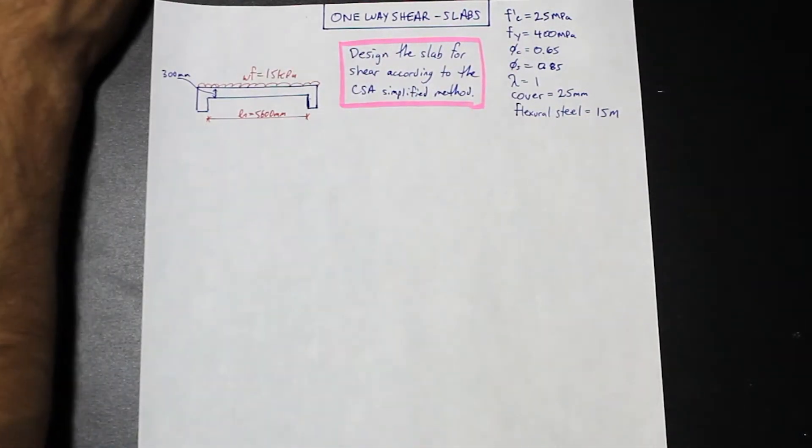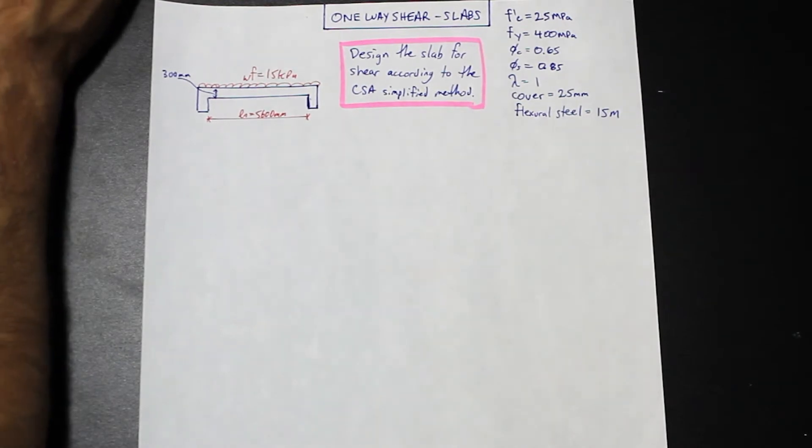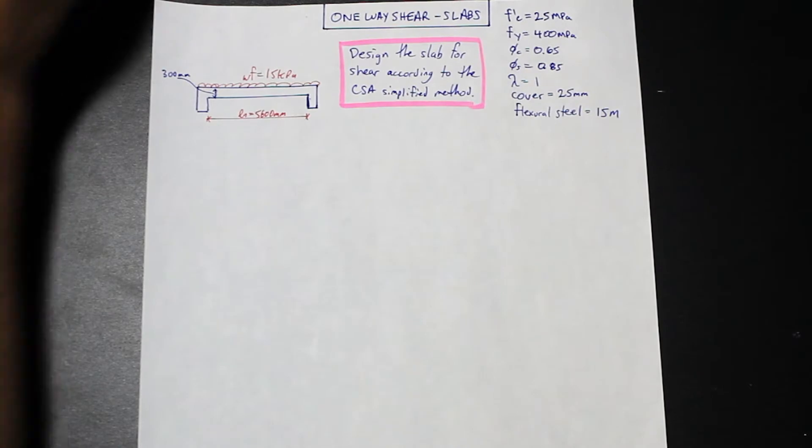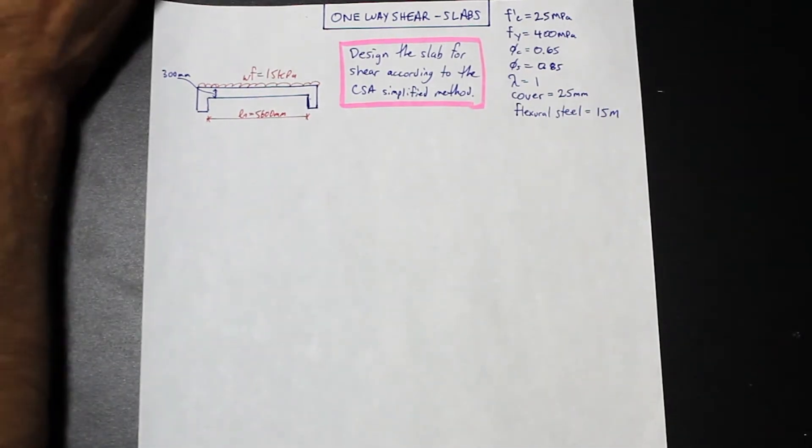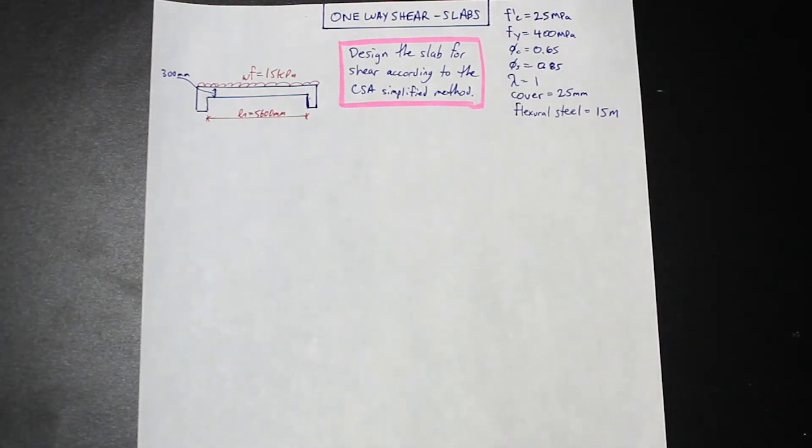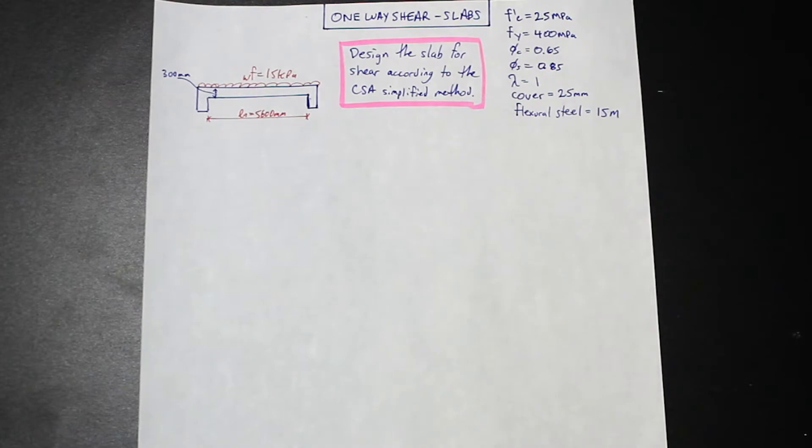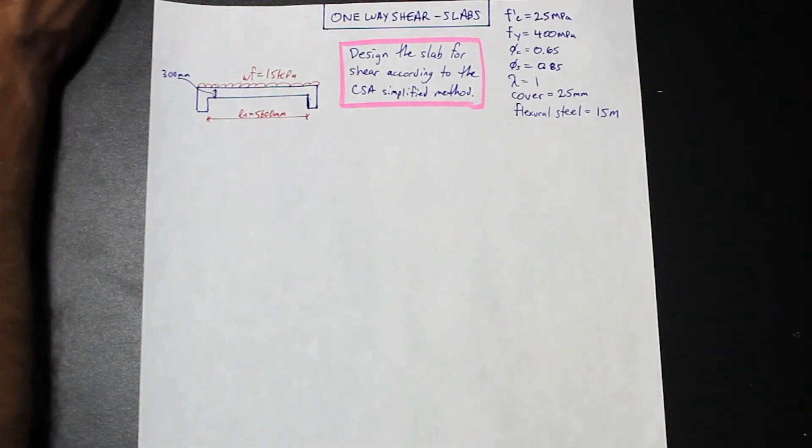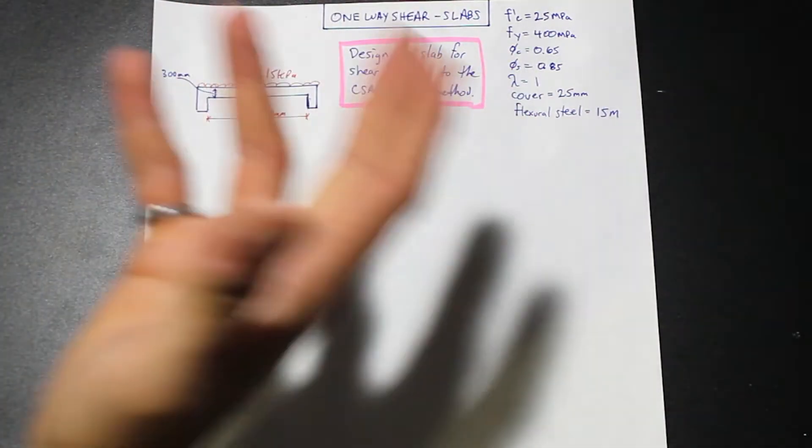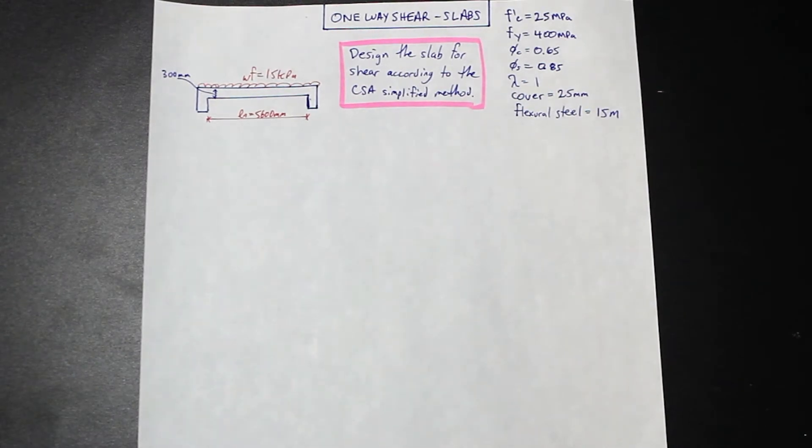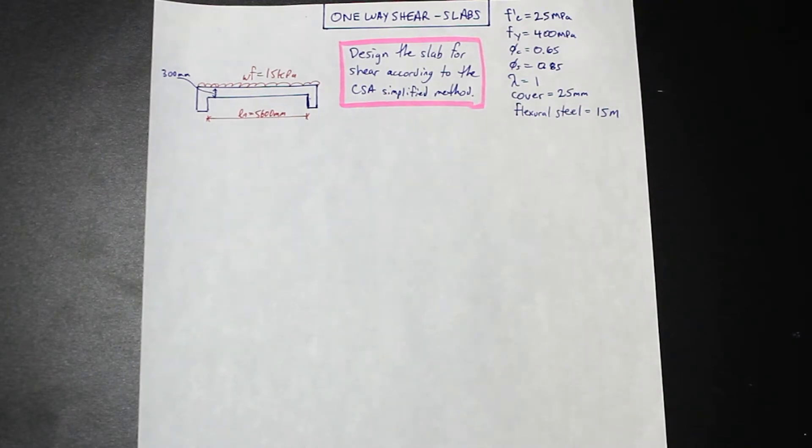Design the slab for shear according to the CSA simplified method. What is the CSA simplified method? The CSA simplified method arose from the complexity of solving for shear using the general method. The general method was actually based on the compression field theory, originally developed by Collins and Mitchell in 1987, where a member subjected to shear can be modeled like a truss with a force distribution similar to that of a stiff and thin plate girder. This is not necessary and is time consuming for general design work.